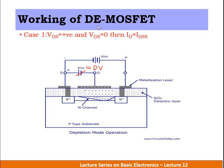Let us discuss the working of Depletion Enhancement MOSFET. It works in both depletion mode and enhancement mode. Case 1: VDS is positive and VGS = 0. A positive VDS means the positive terminal of the power supply is connected to the drain and the negative terminal to the source, with no gate-source voltage applied.